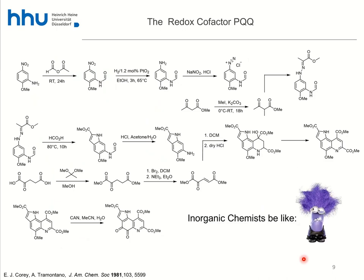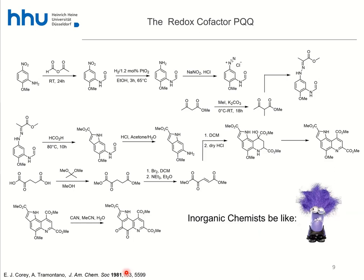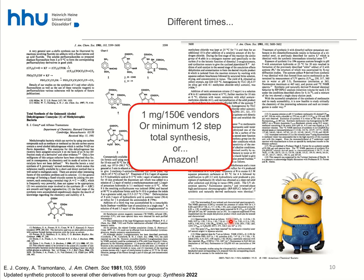It turns out you can synthesize PQQ. We initially used a 12-step synthesis to the trimethyl ester of PQQ, starting from a cheap precursor, followed by saponification. The procedure came from a 1981 JACS paper — and I'm not trying to shame anyone, it was amazing work — but it was only two pages long with very little experimental detail. As inorganic chemists, we had a hard time figuring it out, because there were just vague hints about what the NMR would look like. We needed to know if our synthesis was actually working.